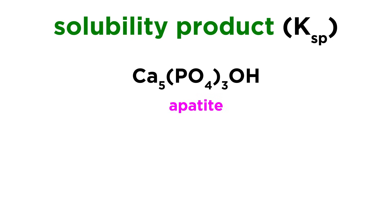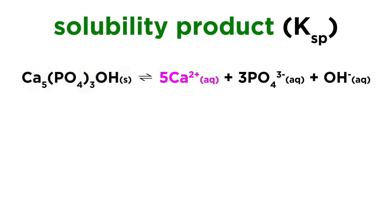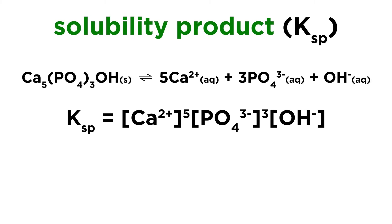We can even do this for something more complicated, like apatite, which is a mineral. This will dissociate into five calcium ions, three phosphate ions, and a hydroxide ion, so the solubility product expression will look like this.